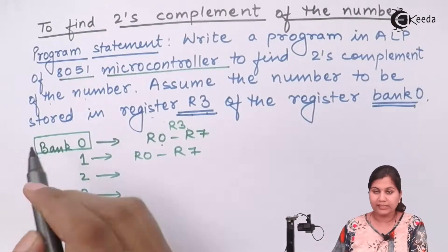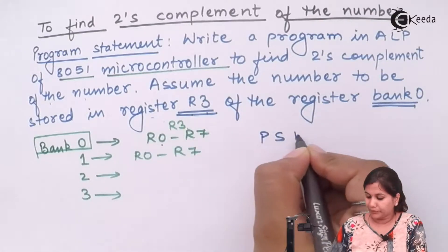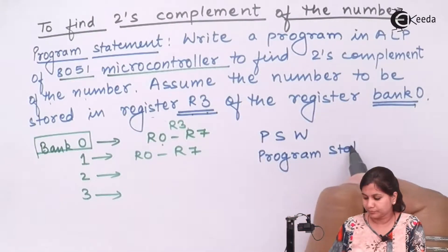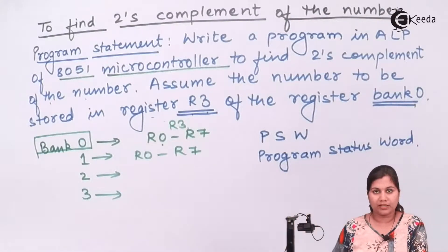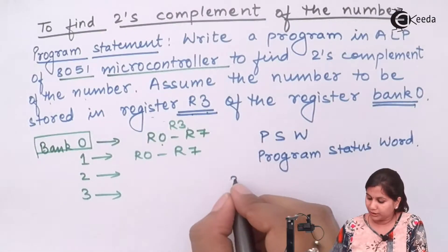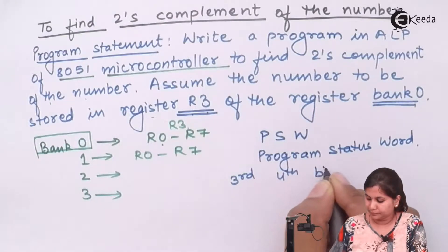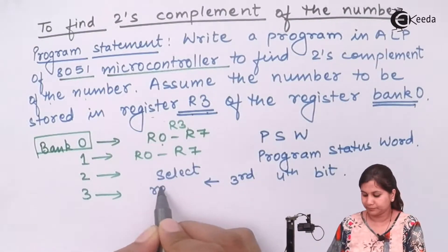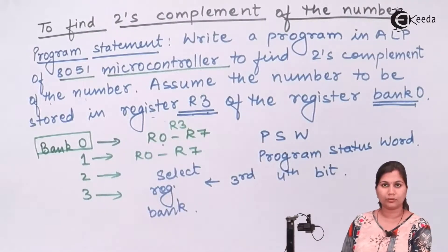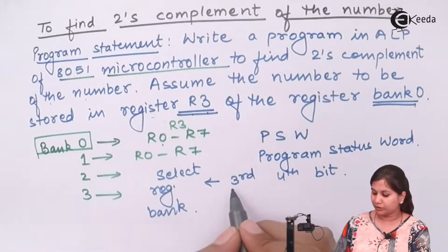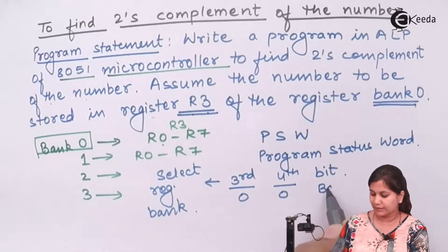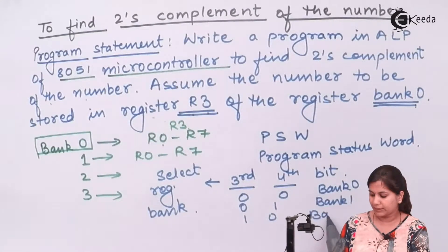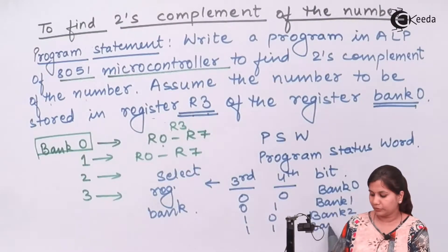To select the register bank, we use the Program Status Word (PSW) in the 8051 microcontroller. In this PSW there are some bits — the third and the fourth bit are used to select the register bank. If bits 3 and 4 are 00 then bank 0 is selected; if 01 then bank 1; if 10 then bank 2; if 11 then bank 3 is selected.